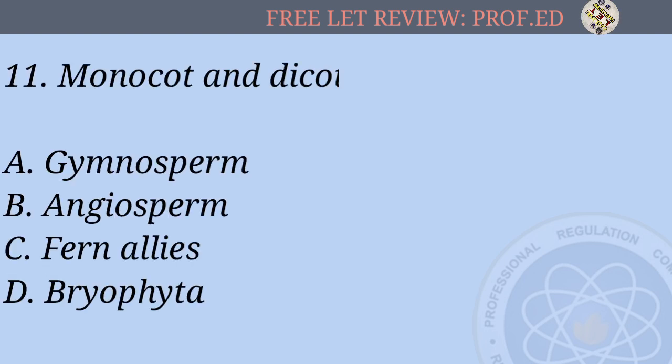Question 11: Monocot and dicot came from: A) Gymnosperm, B) Angiosperm, C) Fern allies, D) Bryophyta.